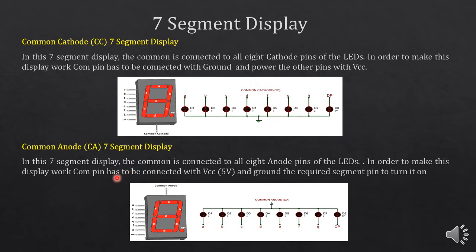In the common anode configuration, all the anodes of the LEDs are connected together and they are connected with VCC for its working. While on the cathode side, you have to connect it with ground for the working of the common anode 7-segment display.